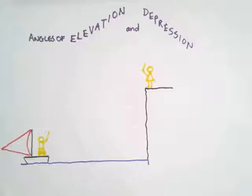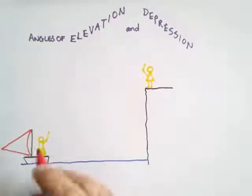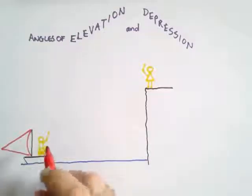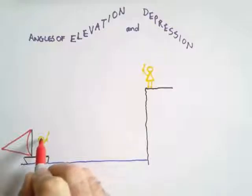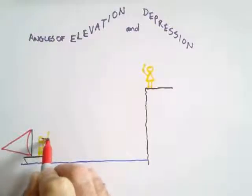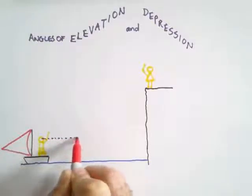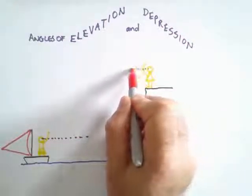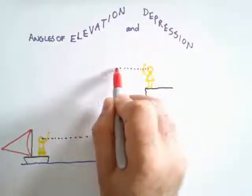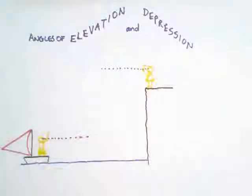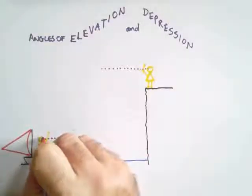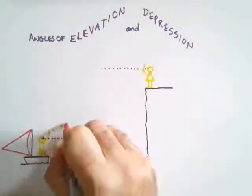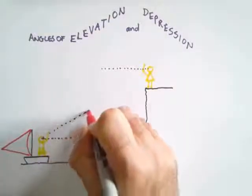In angles of elevation and depression, our direction is always in respect to the horizontal. If the horizontal line is here and the horizontal line is there, they are always parallel. This will be the line of sight, which is always a straight line.